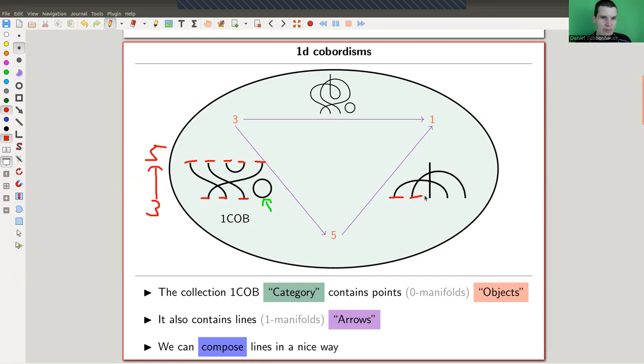Here's another example. It goes from five, right? Zero-dimensional points, zero-dimensional manifolds to one. Again, a point, zero-dimensional manifold. It's a map from five to one, and this was a map from three to five.